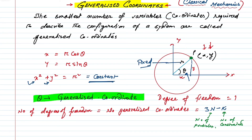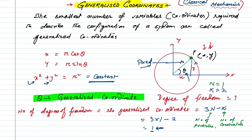In this case we have taken only one particle, so n = 1. We have imposed two conditions: the particle moves in a circular path and it stays in the x-y plane. So k = 2. Degrees of freedom = 3×1 − 2 = 1. So the number of degrees of freedom is 1, and the number of generalized coordinates is also 1.